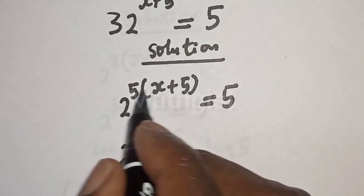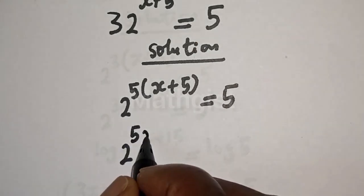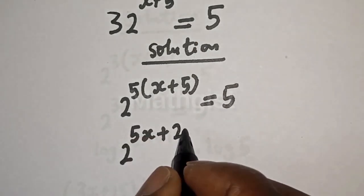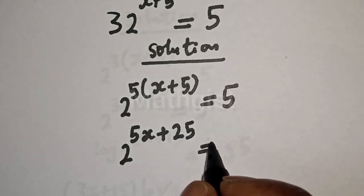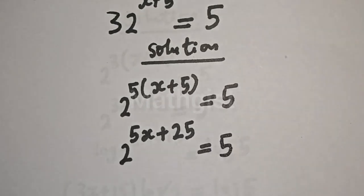Let's open this bracket. 5 times s, 5s plus 5 times 5, 25 is equal to 5.